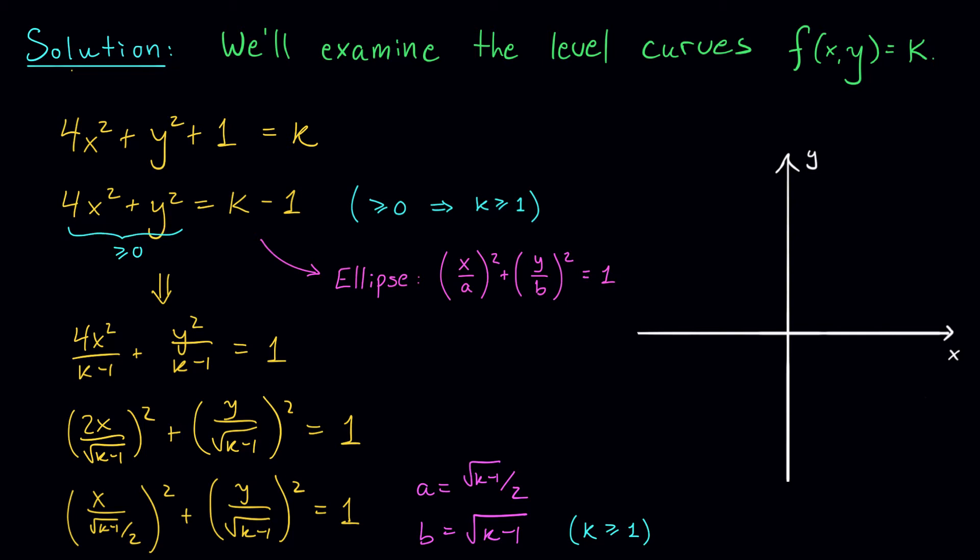The only way you could do that is if both x and y are themselves 0. So the level curve that we get by slicing our graph at a height of k = 1 is actually just a point. It's a point above the origin.